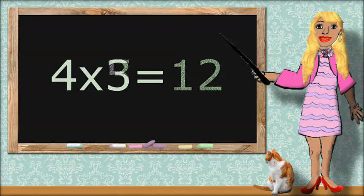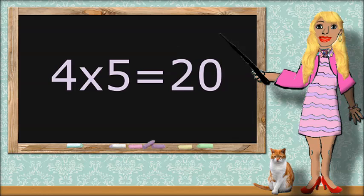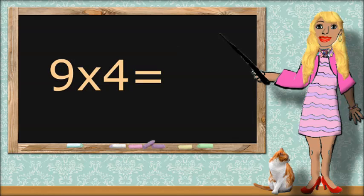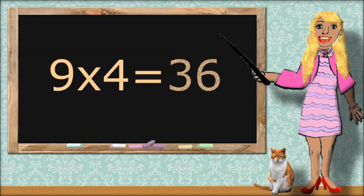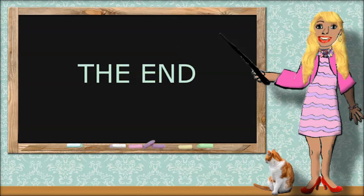4 times 5 equals... 20. 9 times 4 equals... 36. The End.